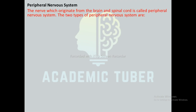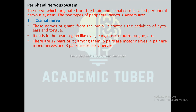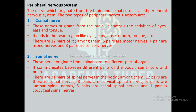The peripheral nervous system consists of nerves originating from the brain and spinal cord. It has two types: cranial nerves and spinal nerves. Cranial nerves originate from the brain, control activity of the eyes, ears, and tongue, and there are 12 pairs — 5 pairs are motor nerves, 4 pairs are mixed nerves, and 3 pairs are sensory nerves. There are 31 pairs of spinal nerves: 12 thoracic, 8 cervical, 5 lumbar, 5 sacral, and 1 coccygeal.